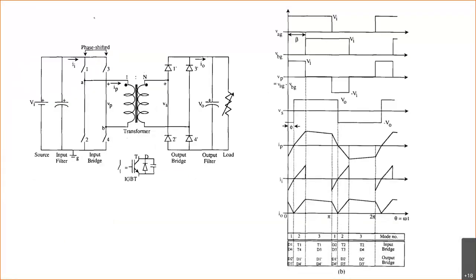This is the circuit we already discussed. We have the input, some optional filter, and the H-Bridge. We have a high-frequency transformer with a turns ratio of 1:N. The output is fed from a bridge rectifier, giving a DC output. The power flow depends on the phase shift between the input and output side, and it occurs because of the leakage inductance of the transformer. Additional inductance or a resonant inductor is needed if you want ZVS operation.